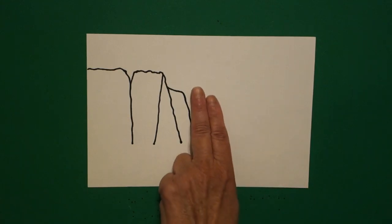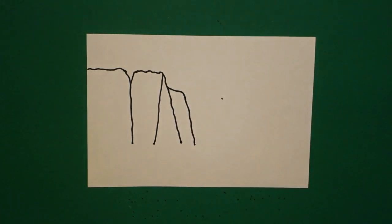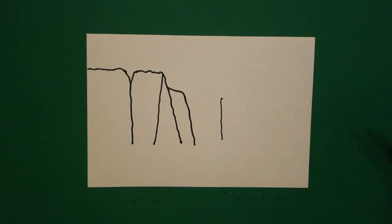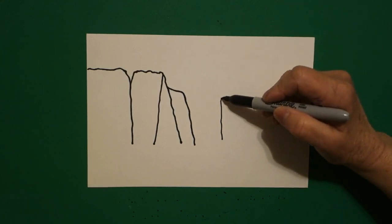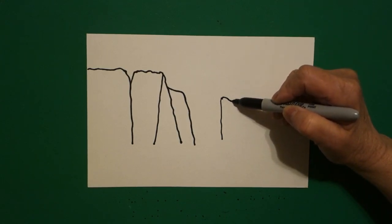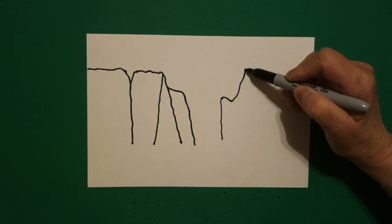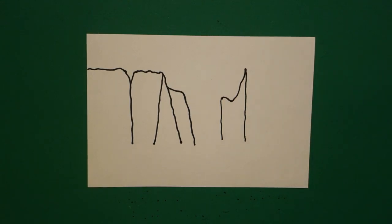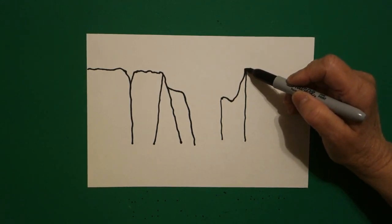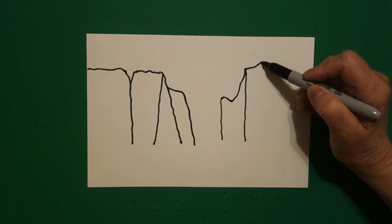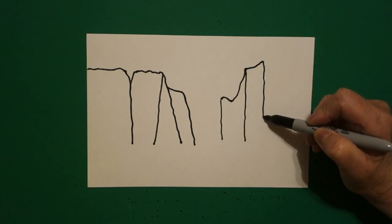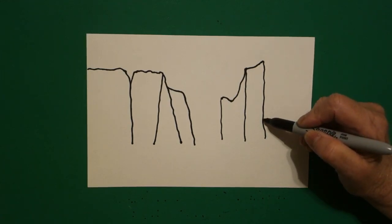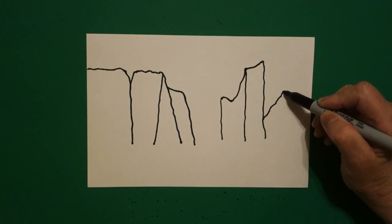Now I take two fingers and I put a dot going towards the right. We're going to draw a wavy line down, leave it floating. Come back to the dot, draw a slightly curved line down, slightly curved line up, slightly wavy line down and leave that floating. Come back to the top, we're going to draw a slightly curved line up, down and leave that floating.